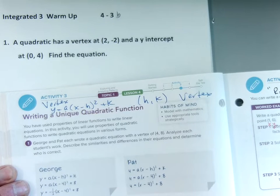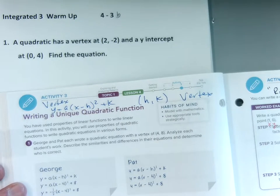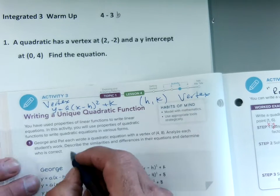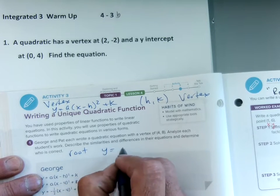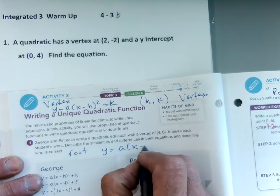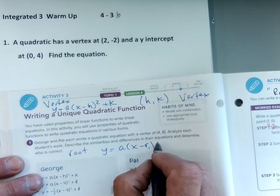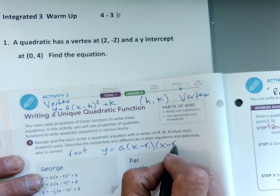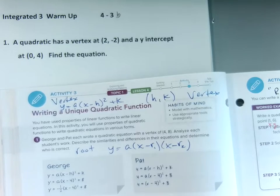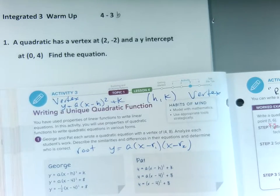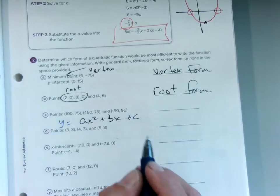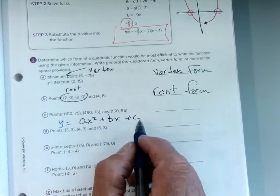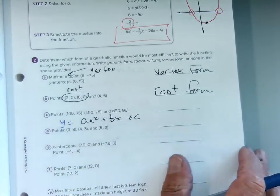Our second form is root form, which is y equals a times (x minus r1) for first root, (x minus r2) for second root. And our third one we're going to talk specifically about tomorrow more than others, and that is our standard form. That's our y equals ax squared plus bx plus c. We'll do more of this tomorrow.